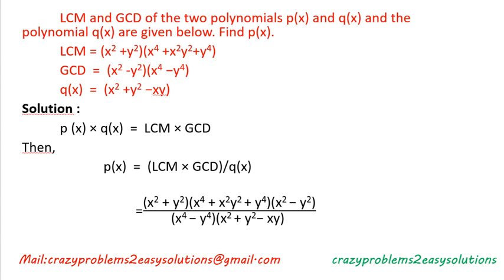Now for the second problem: given LCM and GCD of two polynomials p(x) and q(x), find p(x). LCM = (x² + y²)(x⁴ + x²y² + y⁴), GCD = (x² − y²)(x⁴ − y⁴), and q(x) = x² + y² − xy.